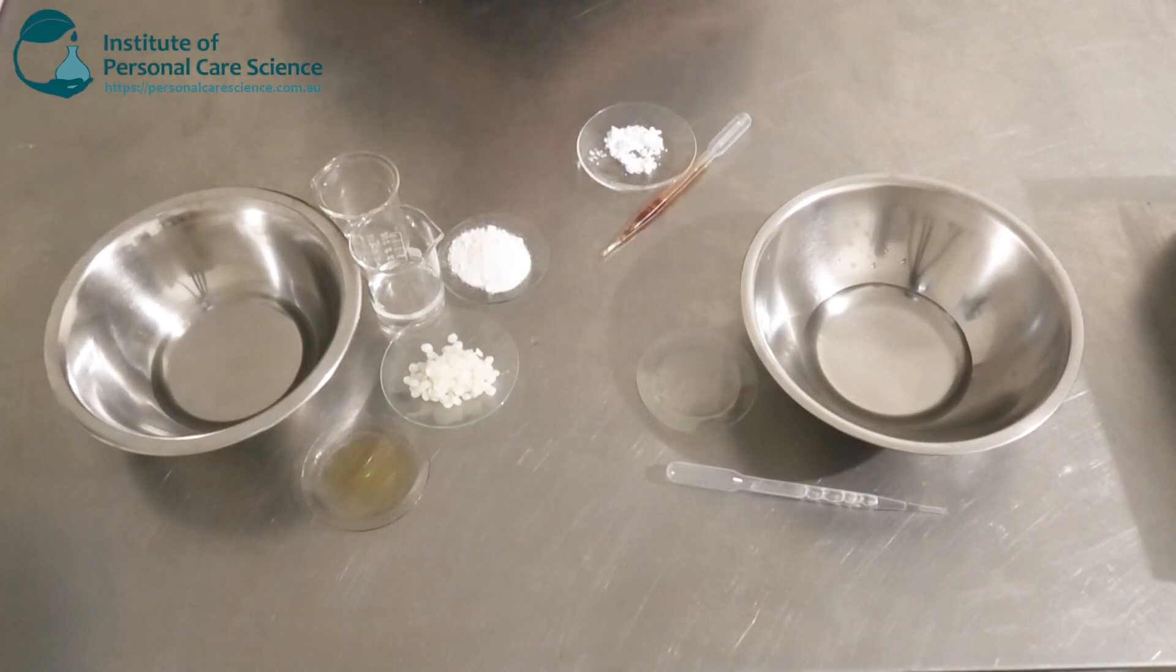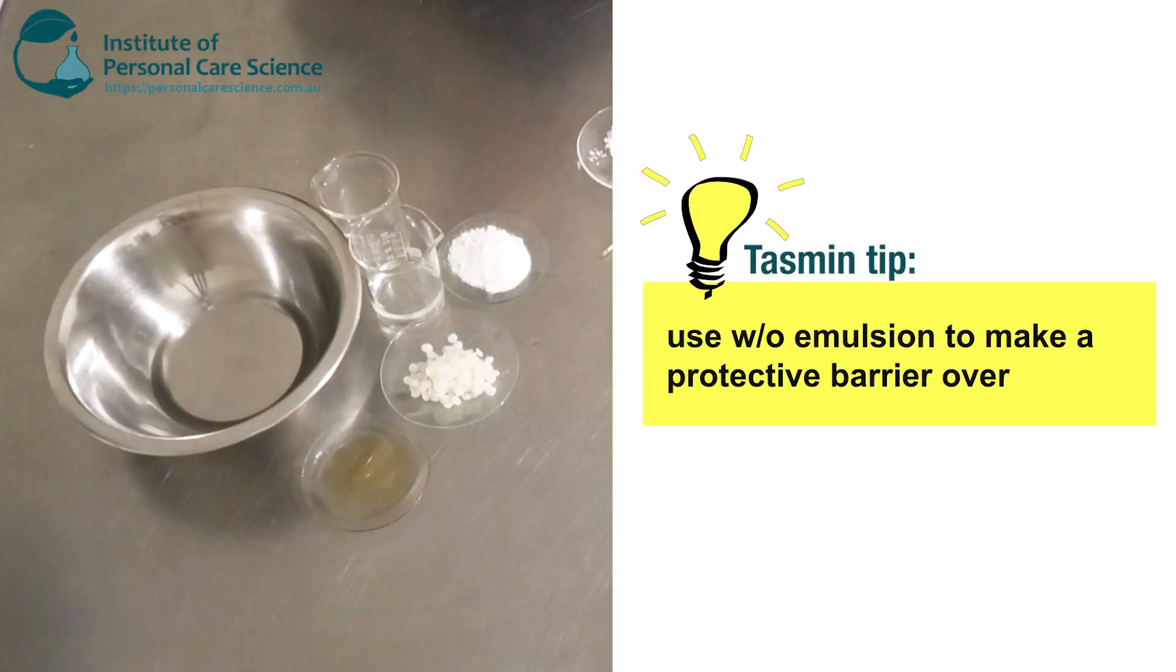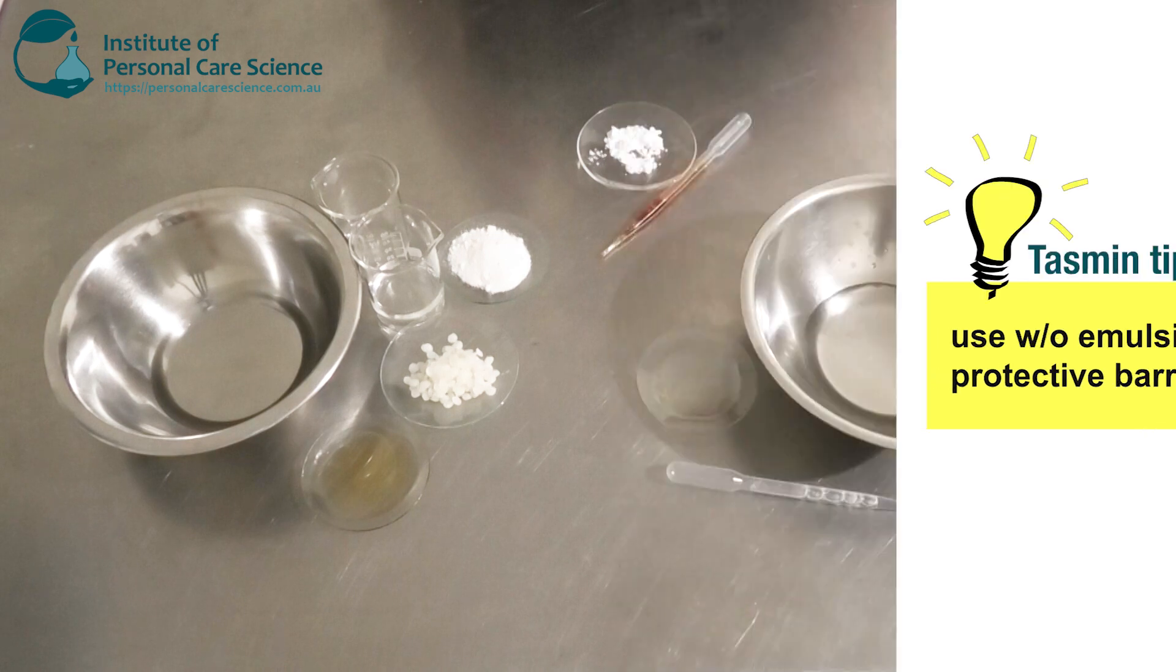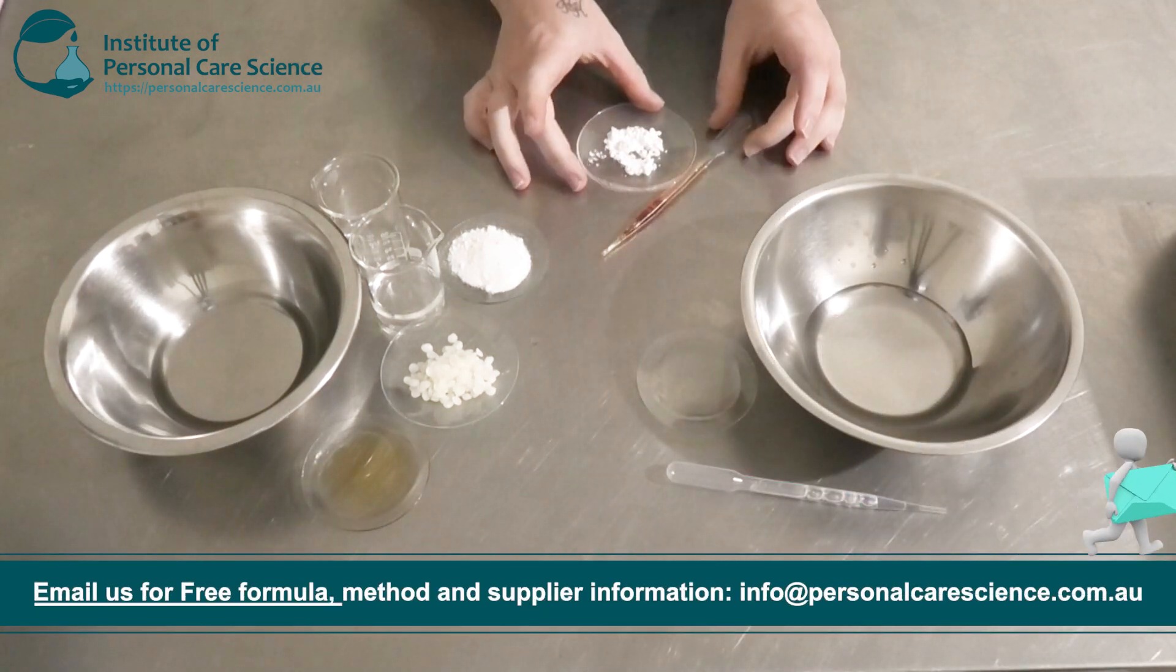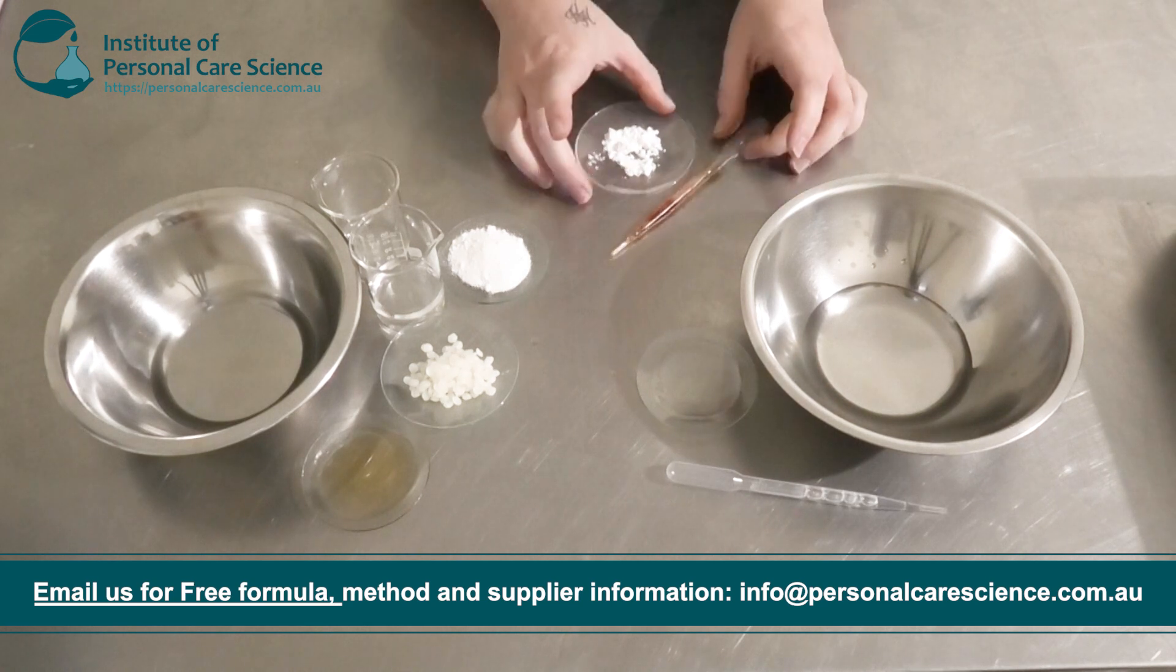Firstly, you want to make a water and oil emulsion here because we want to make a protective barrier for the skin, so we're going to use a water and oil emulsion. I've got my water phase and my oil phase here, and I've also got my heat sensitive materials here.